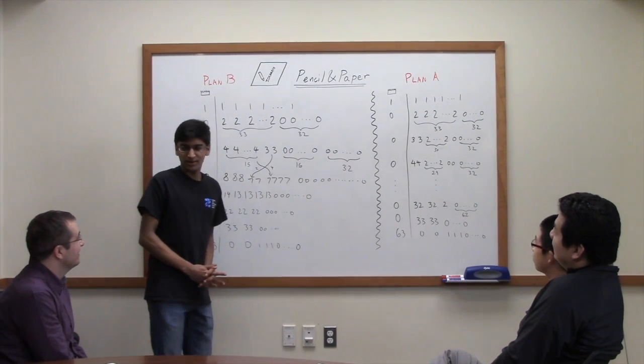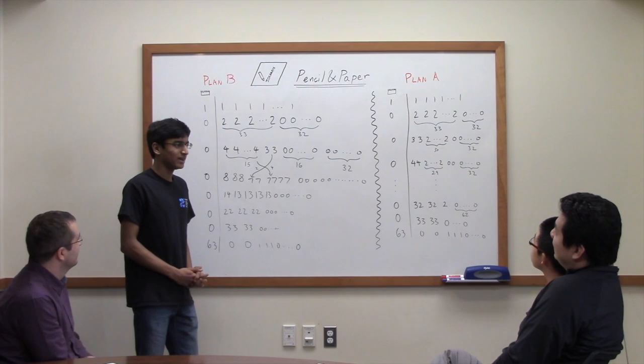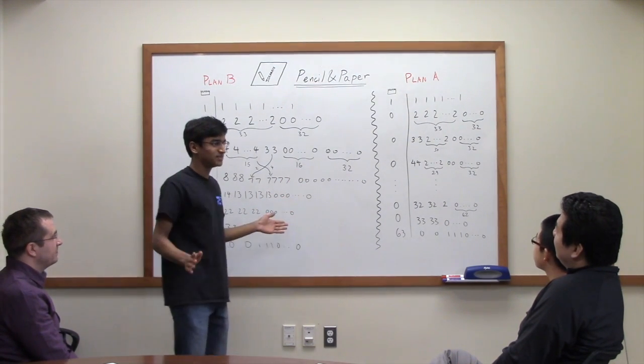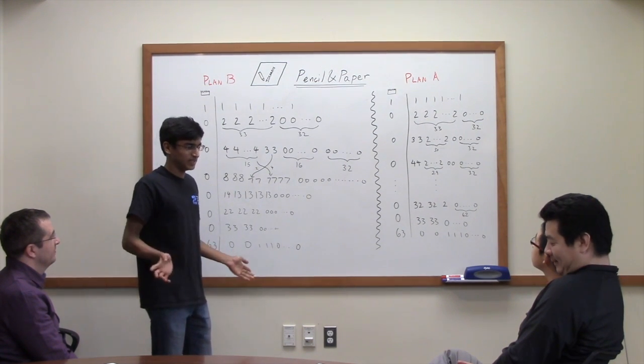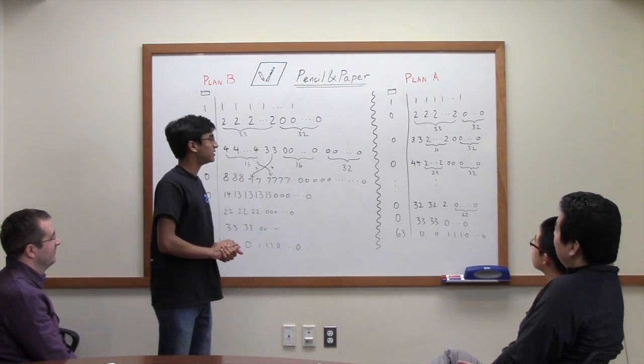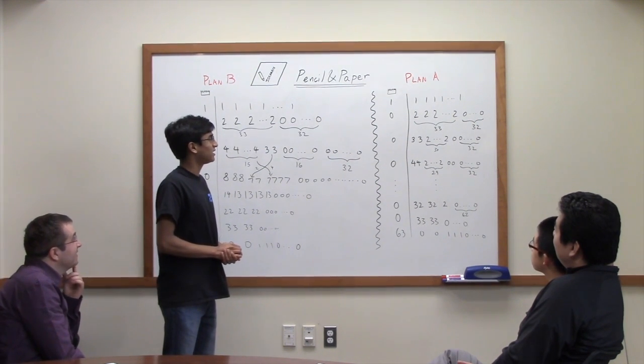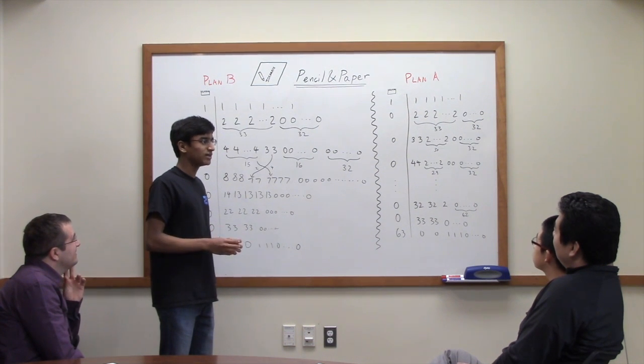So now we're going to talk about the last problem, number five. This is the problem with the king after the revolution. There's the king and there's 65 citizens, and they all have an equal salary of one dollar. The king can propose plans where he can change the number of dollars that people get.